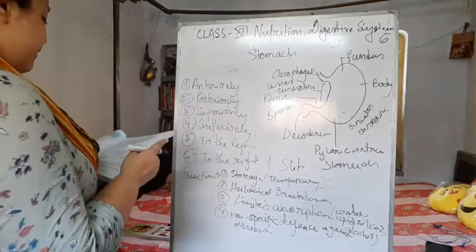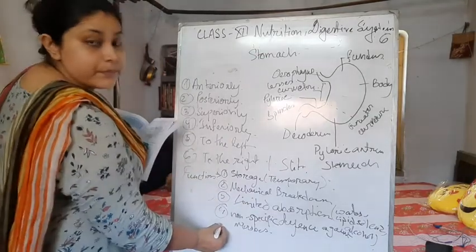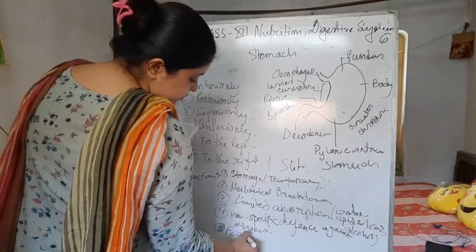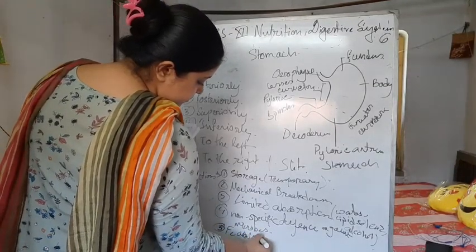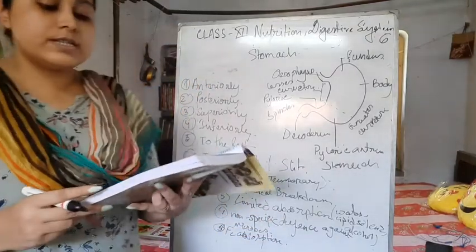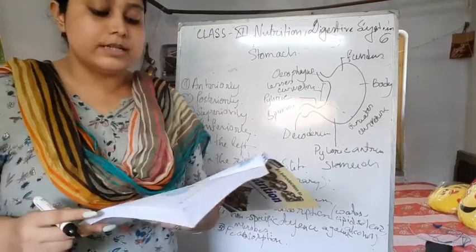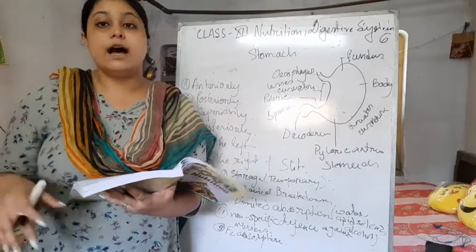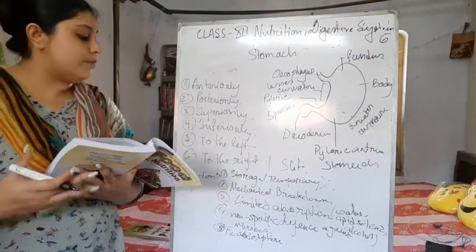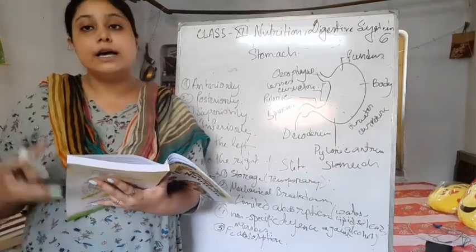The final function is the preparation of iron for absorption. The acid environment of the stomach solubilizes the iron salts, which is required before iron can be absorbed. This starts the absorption function of iron.